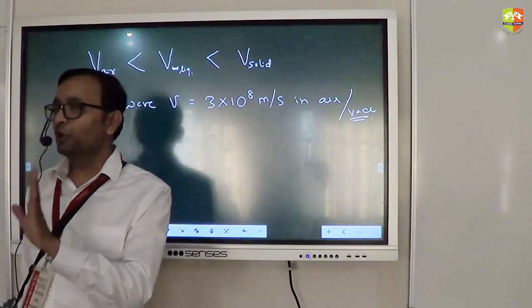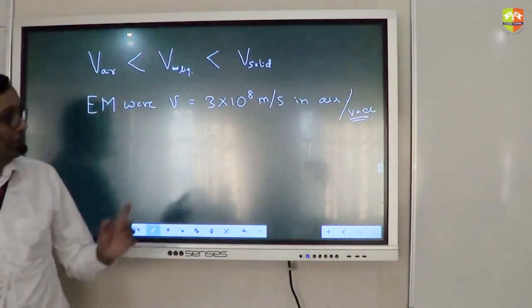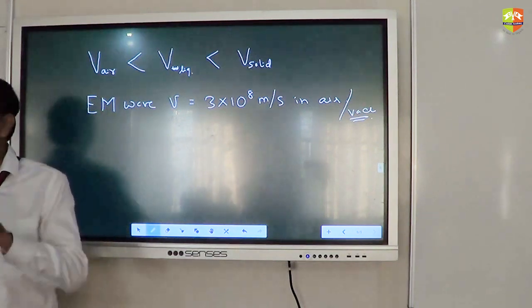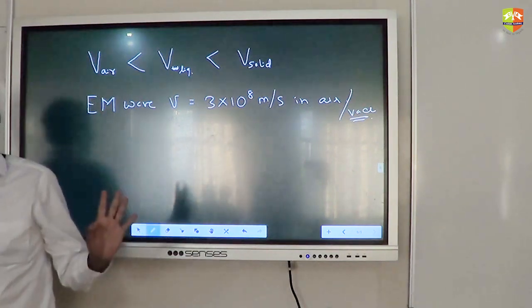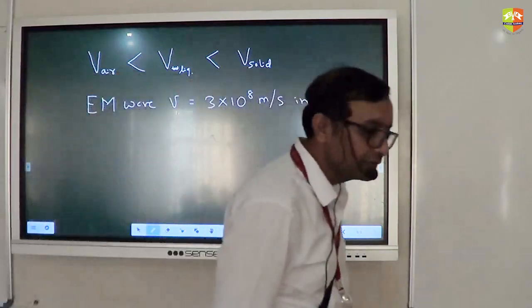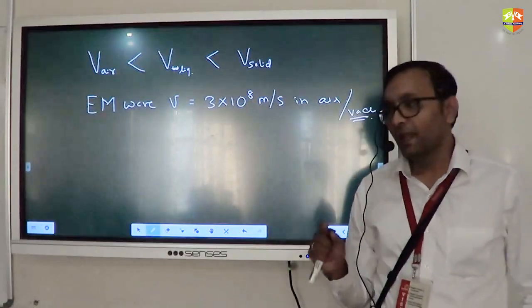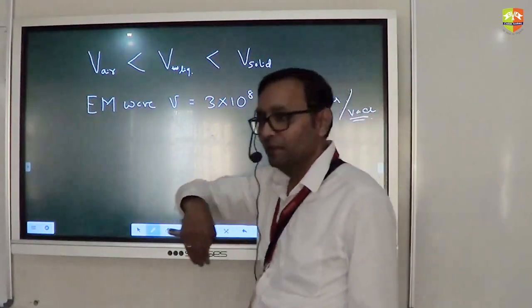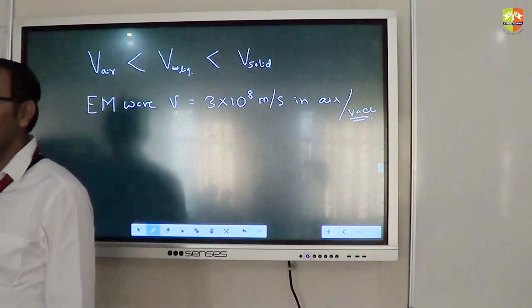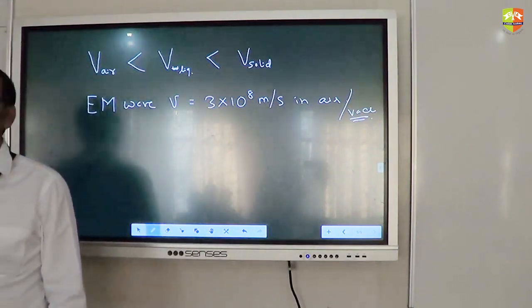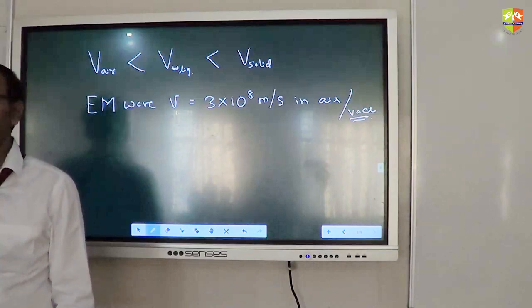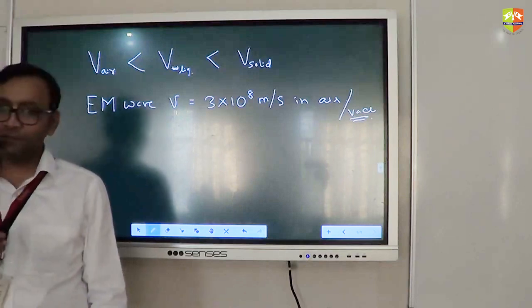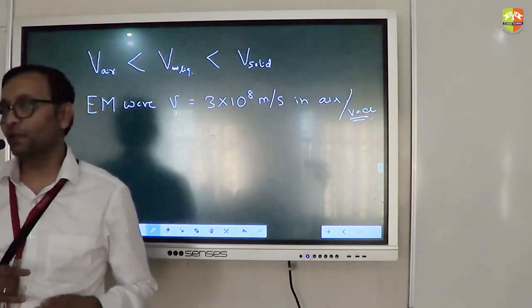It is actually a universal constant. Speed of light is a universal constant. No object can travel more than the speed of light. Even relative speed cannot be more than this. Relative absolute whatever speed cannot be more than this. And have you seen a phenomenon in which lightning happens. Light comes first and then you hear the sound. Because light travels faster.